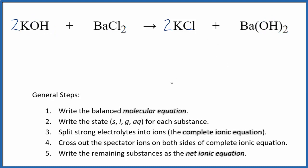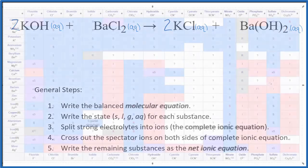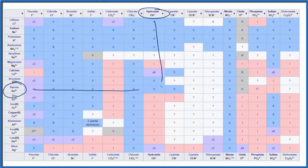Now we can write the state for each substance. Potassium hydroxide is a strong base, so we split that apart. Chloride is very soluble, so they're going to be soluble. And barium hydroxide is considered a strong base as well, so we write aqueous — that means it's soluble in water. But let's take a look at a solubility chart just to make sure, because sometimes there's some confusion about barium hydroxide. On the solubility chart, we find barium and then hydroxide — and we have an S, which means it's soluble, so it dissolves in water. That's why we wrote aqueous.